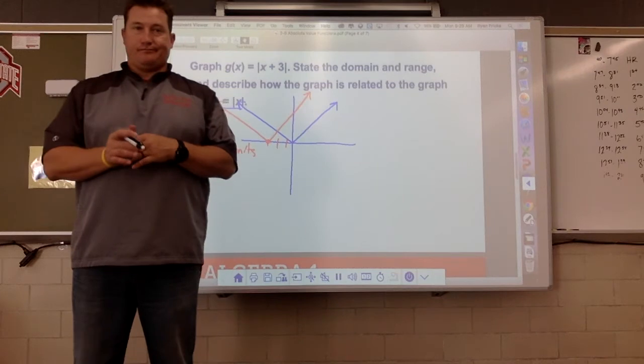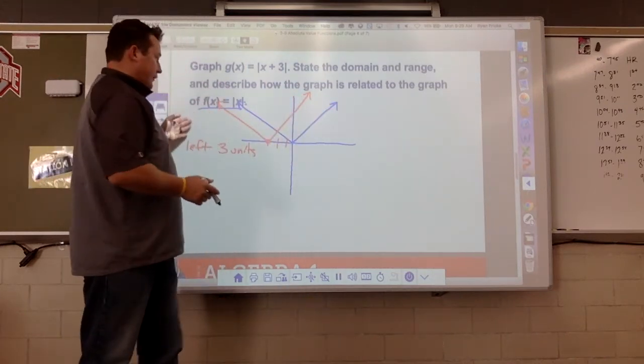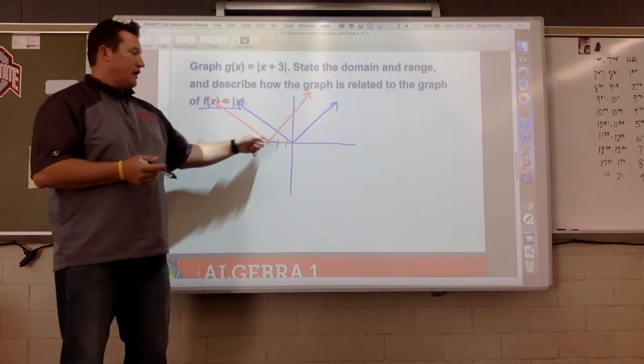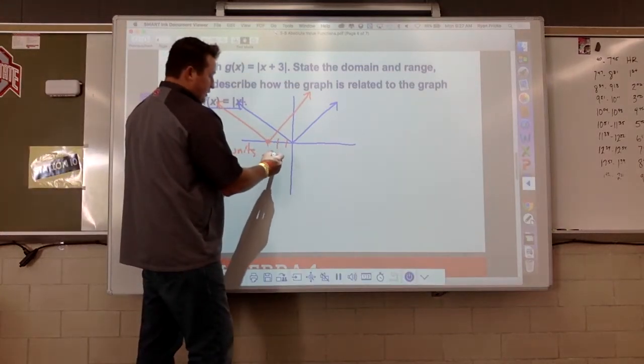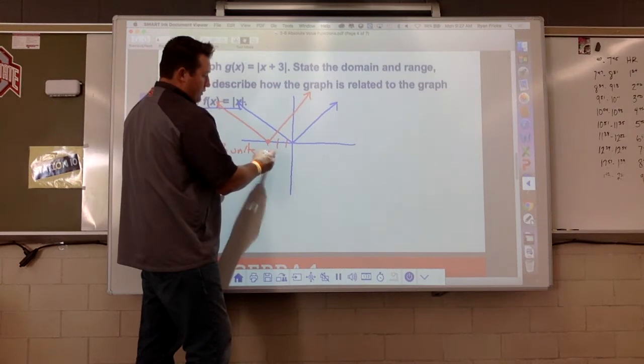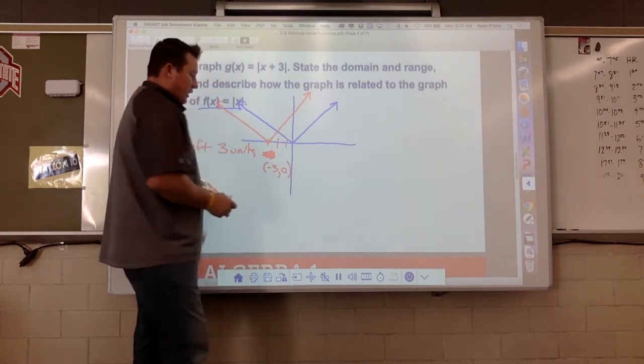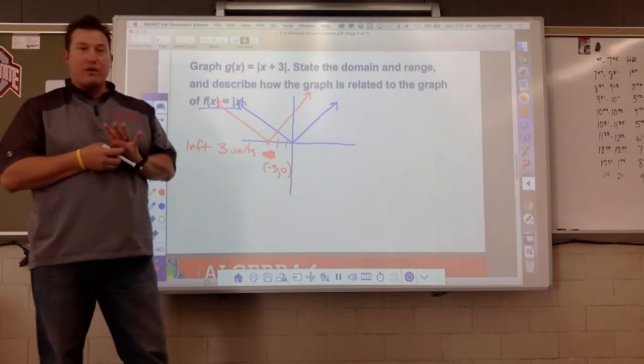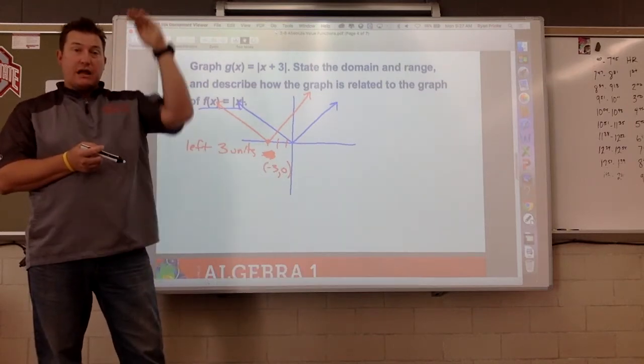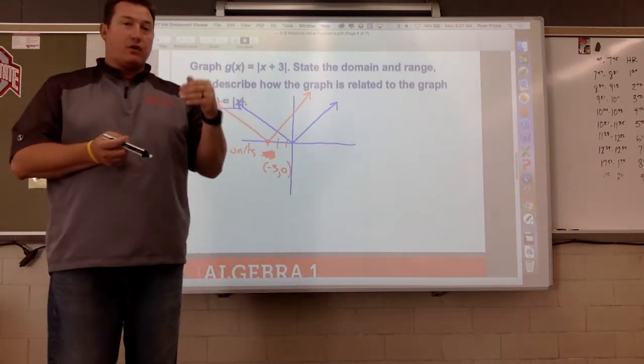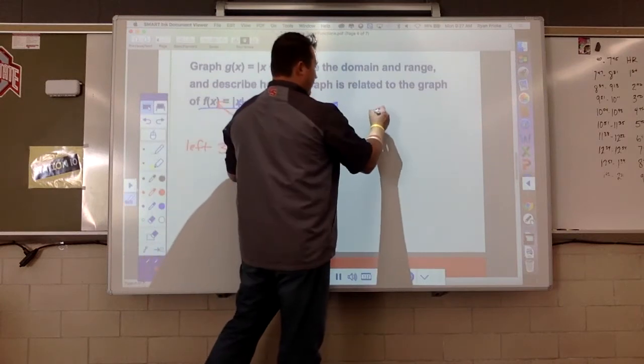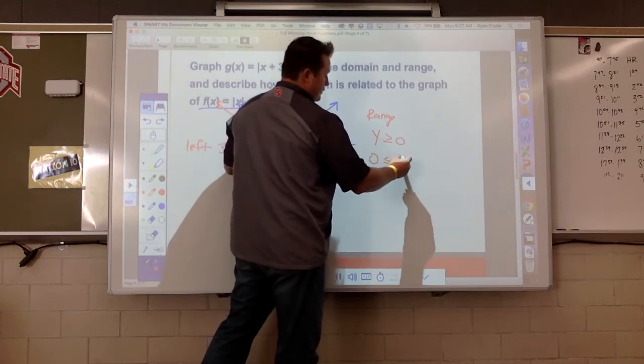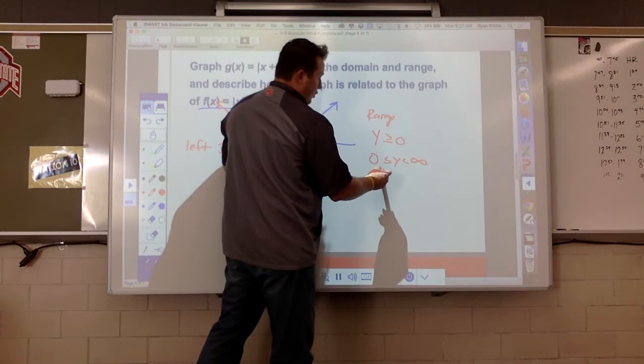So describe how the graph is related, it is just left three units. Domain and range. Again, domain all x values still, we're getting to all negatives, all positives, everything there. Range, once again, look for that vertex. That vertex here, this is at negative three comma zero. This doesn't get any lower than that point right there. So how high does it go? Infinity. How low does it go? Well, my y value here is zero.